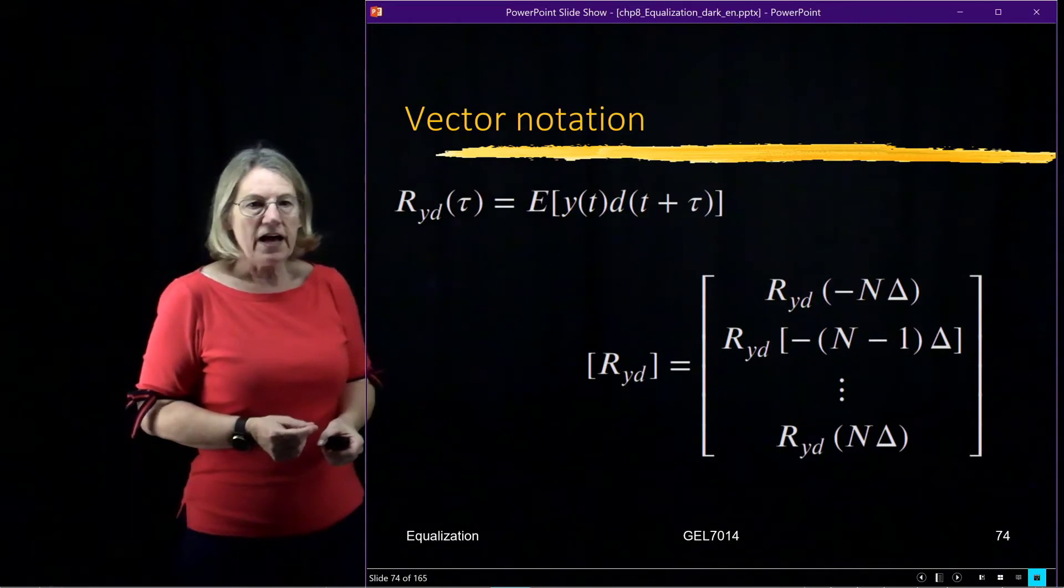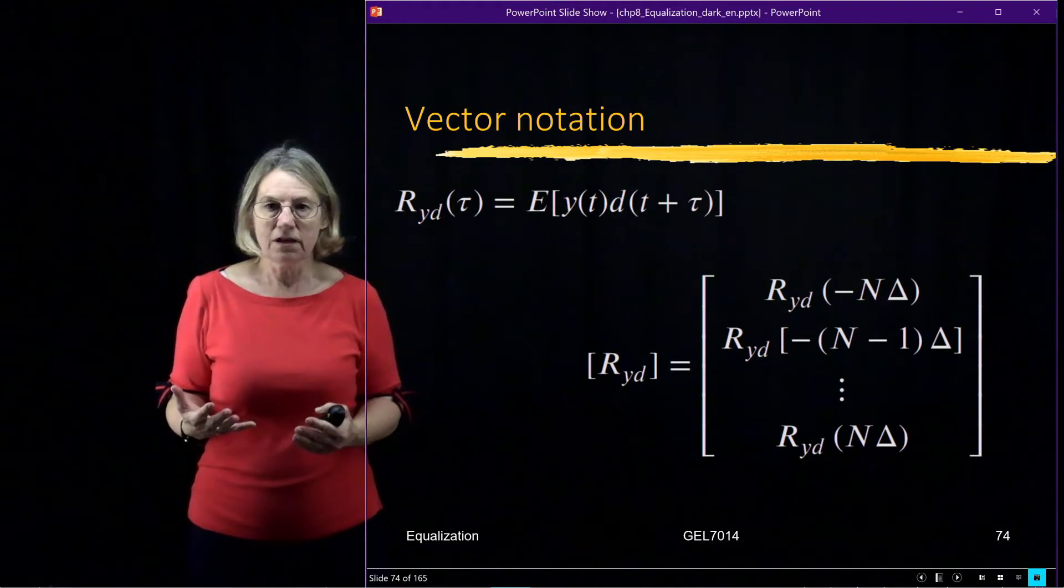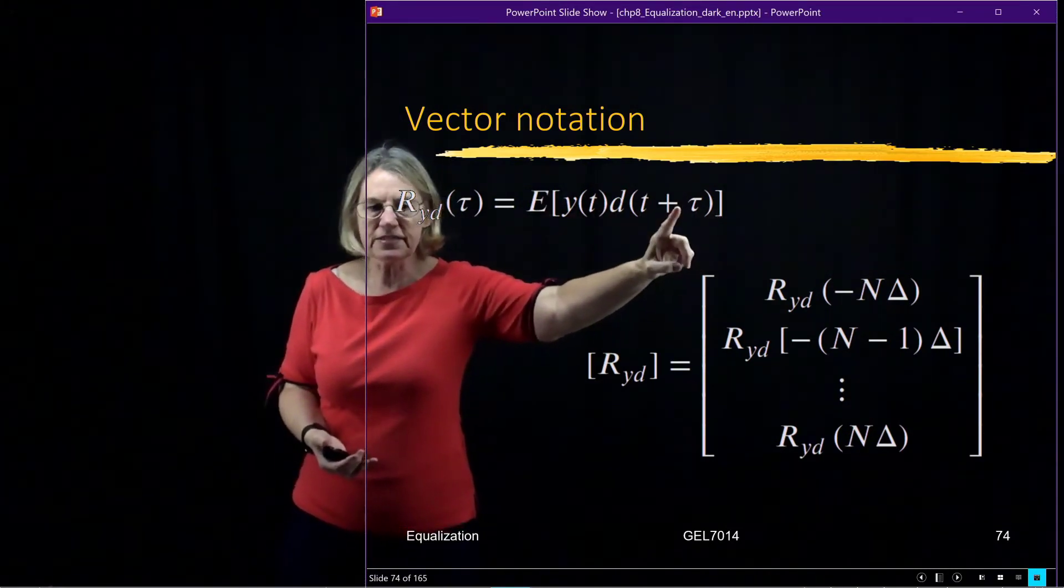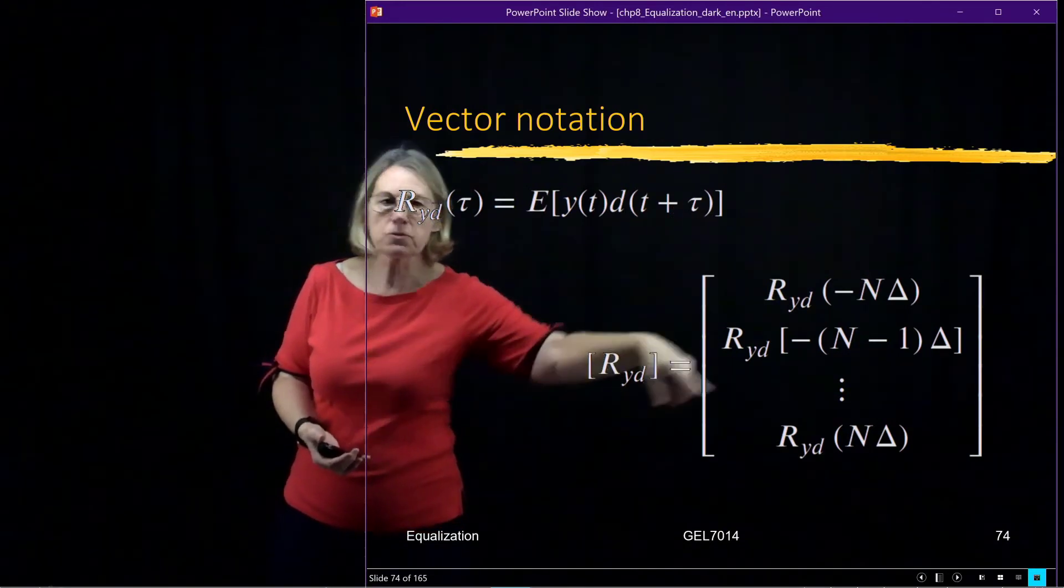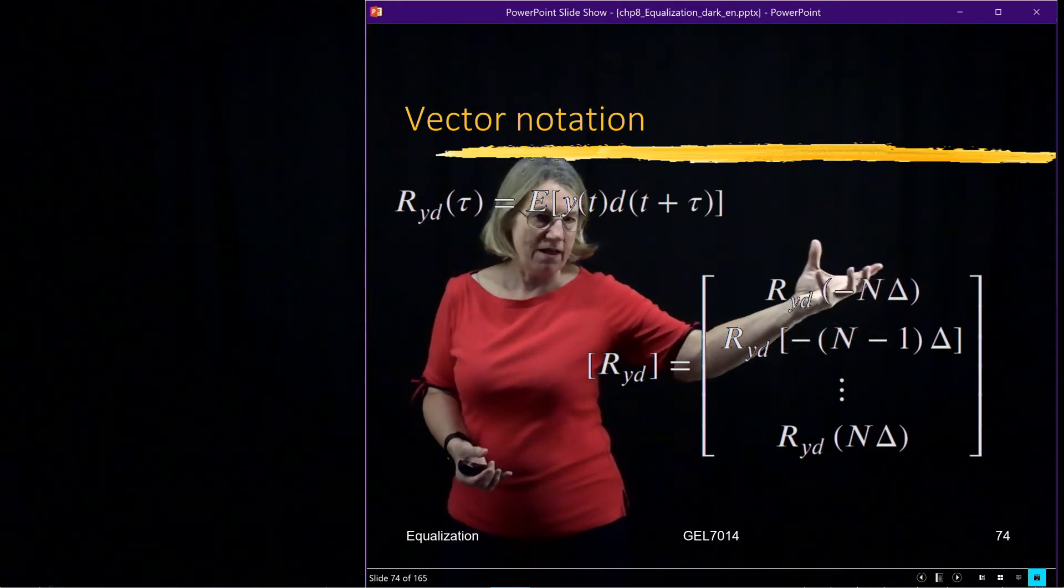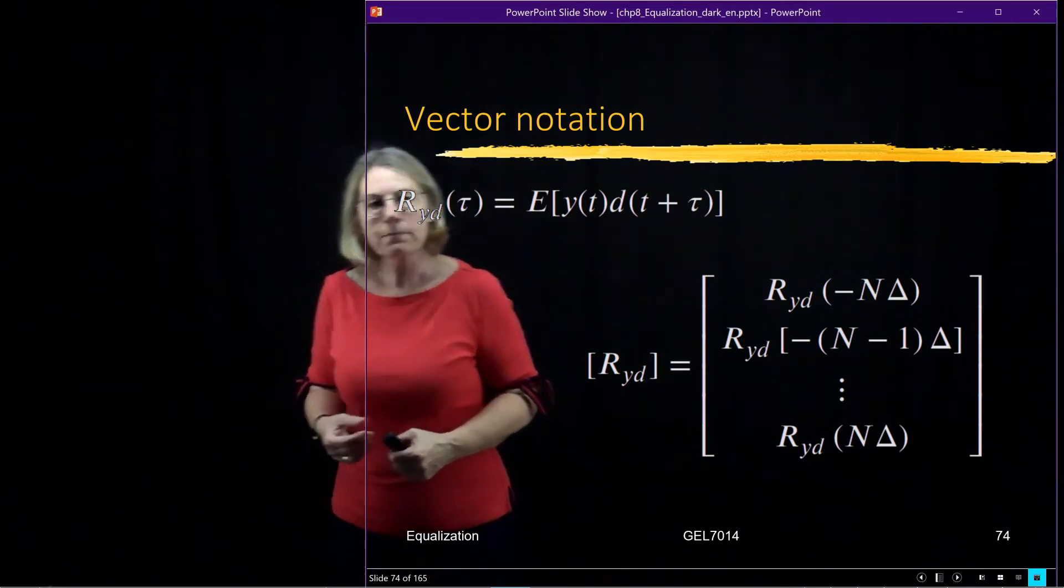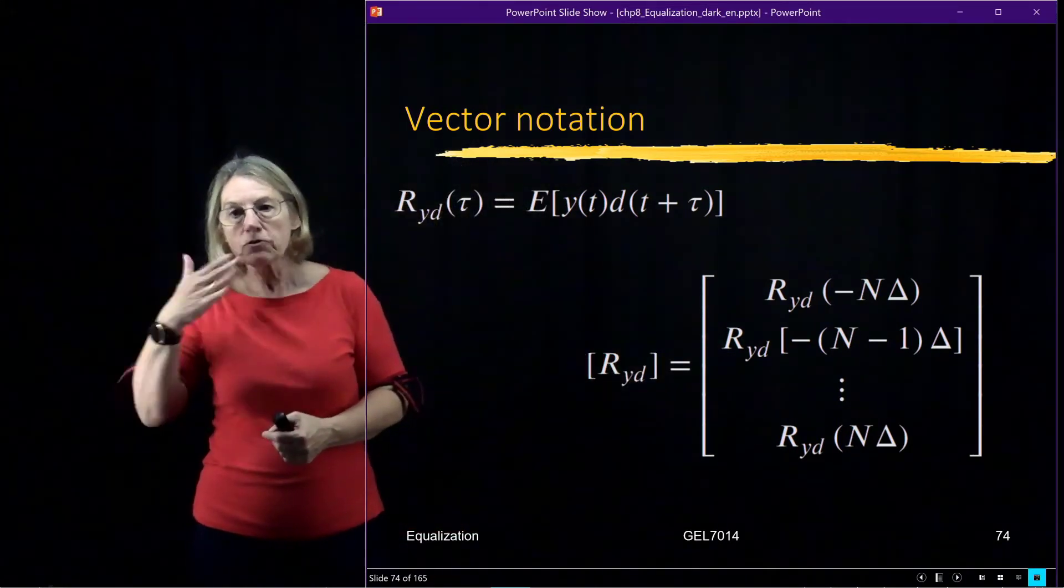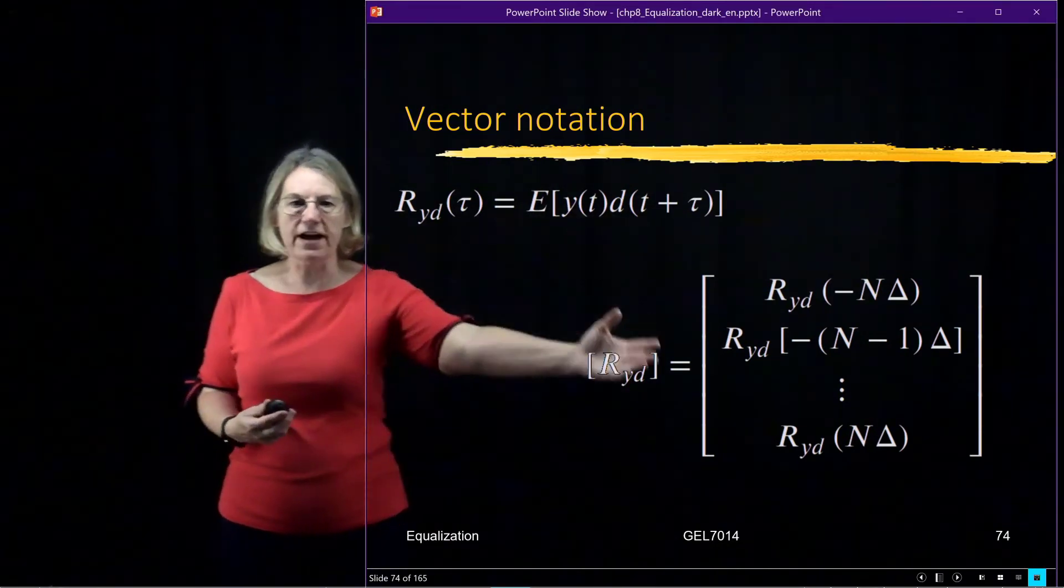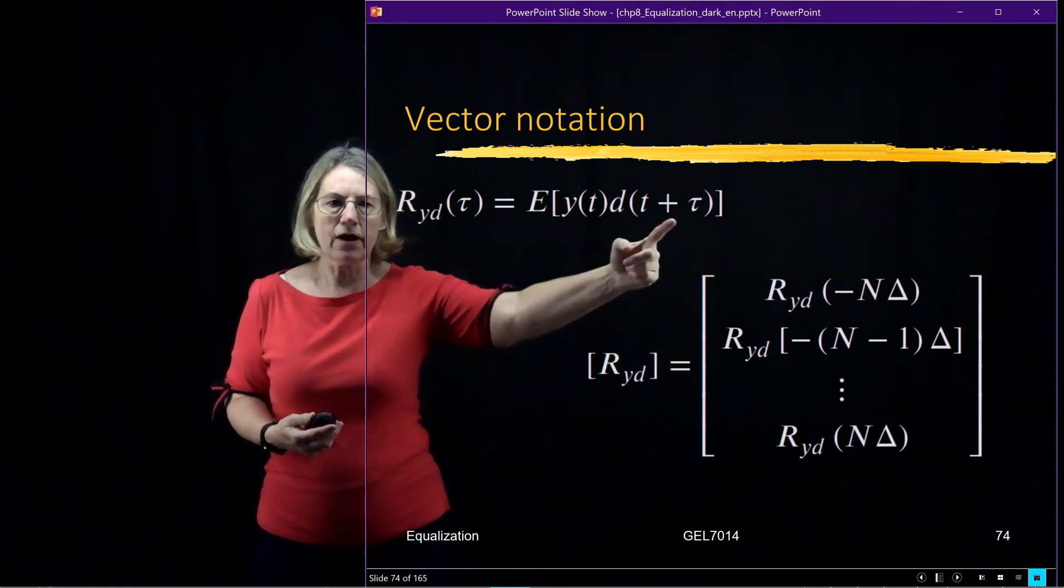So if I were to make a digital version of this, a sampled version, this is a continuous for any tau, which it could be continuous. Now suppose I use tau which are multiples of the delay that I am using inside of my equalizer. So now here it is, 2 to the N plus 1 taps, and I could make a sampled version of this correlation function with 2 to the N plus 1 points. So this becomes a vector in my vector notation, and it's an expected value for a particular lag.